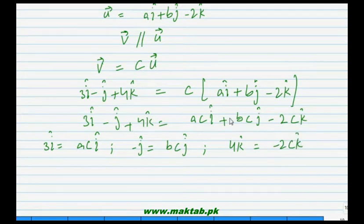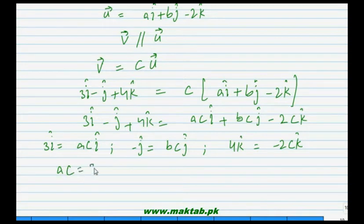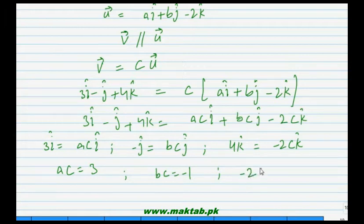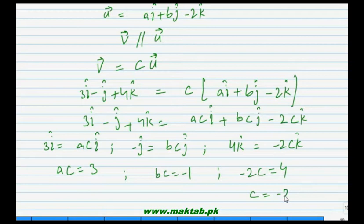Since both vectors are equal, their three components are equal. So: ac = 3, bc = minus 1, and minus 2c = 4. From the third equation, c = 4 divided by minus 2 = minus 2. Then a = 3/c = 3/(minus 2) = minus 3/2. And b = minus 1/c = minus 1/(minus 2) = 1/2.